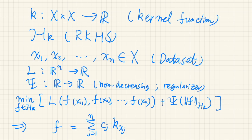The theorem goes as follows. Suppose we have a kernel function k on X, which induces the corresponding reproducing kernel Hilbert space Hk, and we are given a dataset x1, x2, and so on up to xn.